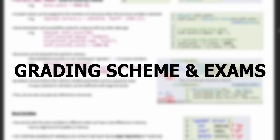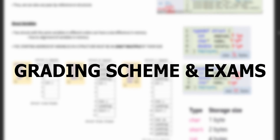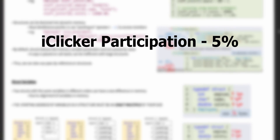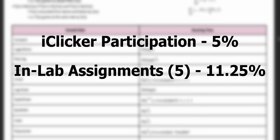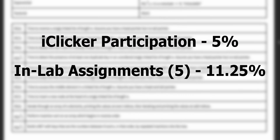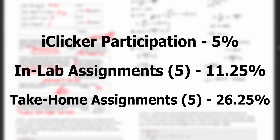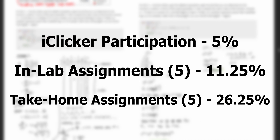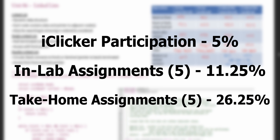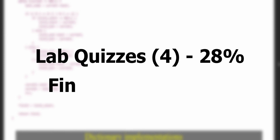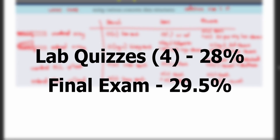In terms of the grading scheme for CompSci 259, here's the breakdown: iClicker participation is weighted at 5% of your overall grade. Your 5 in-lab assignments are weighted at 2.25% each, totaling 11.25%. Your 5 take-home assignments are weighted at 5.25% each, totaling 26.25%. You will have 4 lab quizzes weighted at 7% each, totaling 28%, and a final exam worth 29.5% of your final grade.